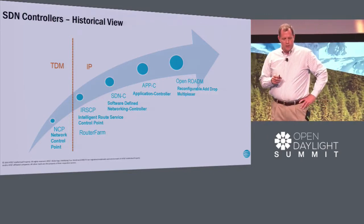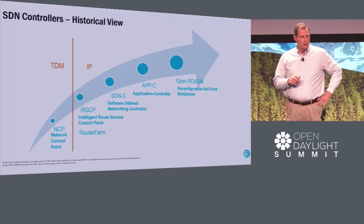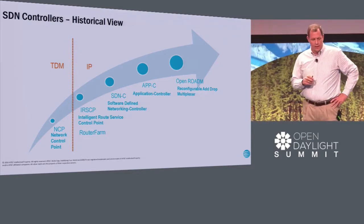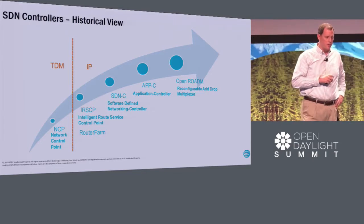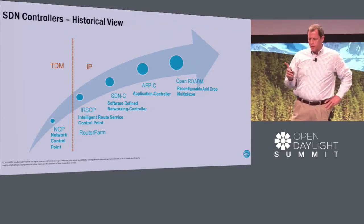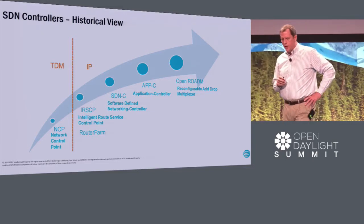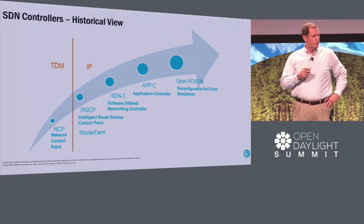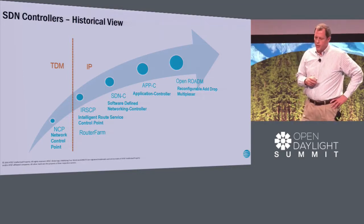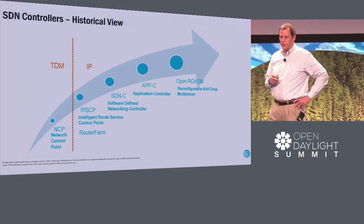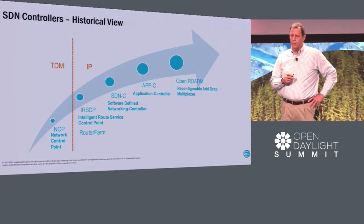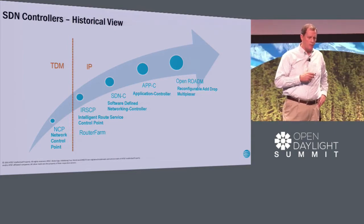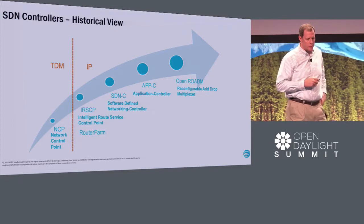Believe it or not, this was something that allowed us to create a virtual network — it was actually called a TDM software-defined network. I want to talk a little bit about what we did early on in the IP area: the Intelligent Route Service Control Point and something we called Router Farm — think Server Farm, but for routers. And then I'm going to get into what I'll call SDN Classic, which is the Layer 2/3 stuff, and the work we're doing there. That really forms the framework for what we do in other areas, in the application controller and in the ROADM — Reconfigurable Optical Add-Drop Multiplexer.